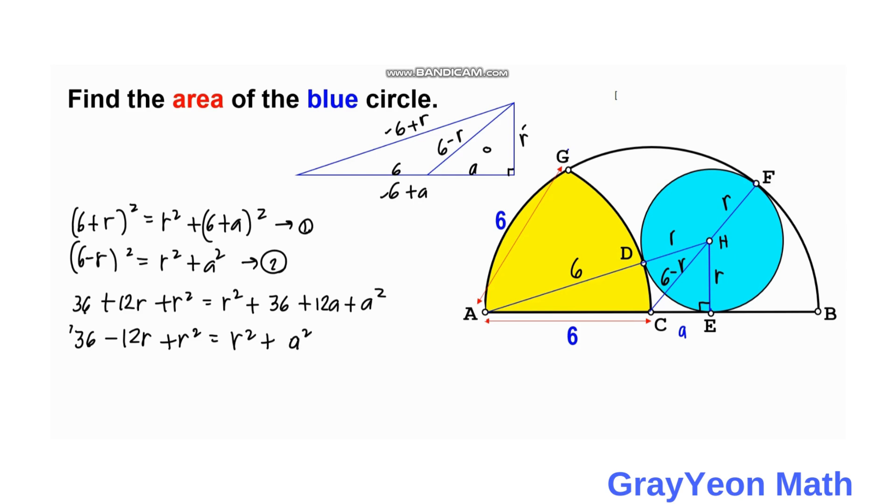Then we subtract this second equation from the first. So this cancels, 36, this becomes 24R, and this cancels, R squared and R squared, and same with this, and this A squared and A squared. So we are left with 24R is equal to 36 plus 12A.